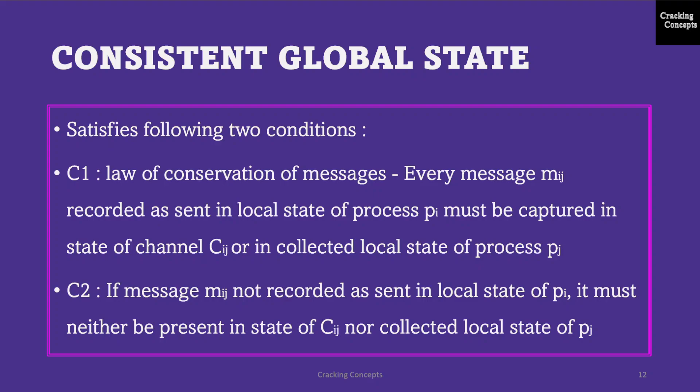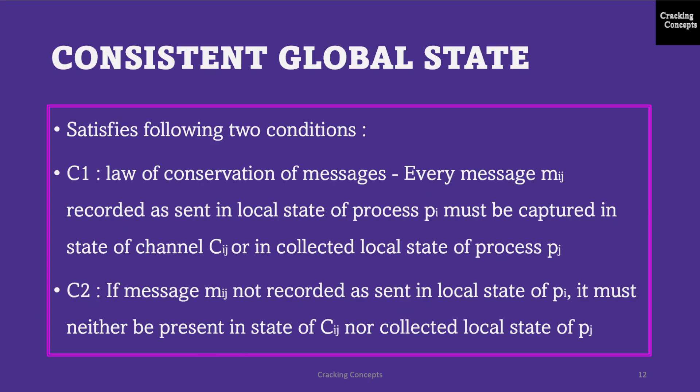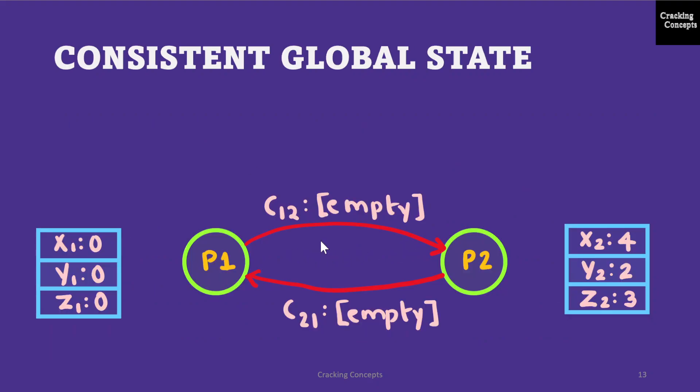We will now look into the consistent global state. A global state is a consistent global state if it satisfies the following two conditions. C1 is the law of conservation of messages, which means that each message MIJ that is recorded as sent in the local state of a process PI must be captured in the state of the channel CIJ or in the collected local state of the receiver process PJ. Condition C2 states that in the collected global state, for every effect its cause must be present. For example, if the message MIJ is not recorded as sent in the local state of PI, then it must neither be present in the state of the channel CIJ nor in the collected local state of the receiver process PJ.